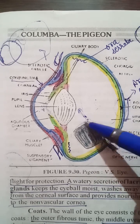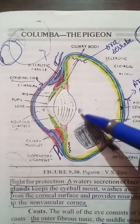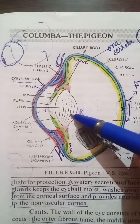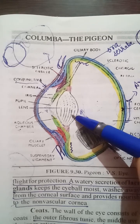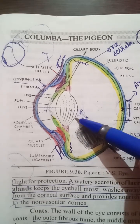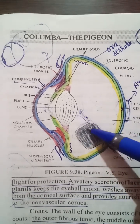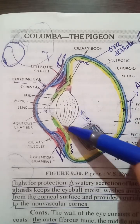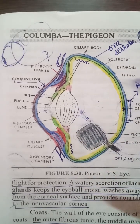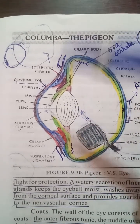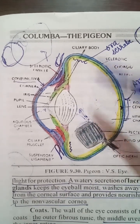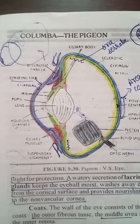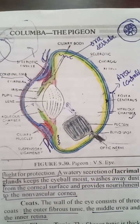The third suggested function is that the pecten can extend forward through the vitreous humor and exert pressure over the lens, changing its curvature. So it may also help in accommodation by putting pressure over the lens and changing its curvature. This concludes the discussion of the function of the pecten and the structure of the avian eye.